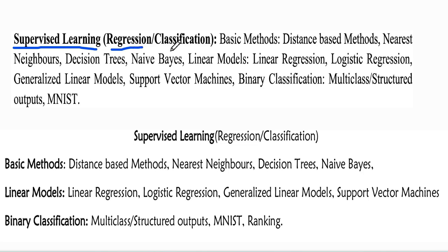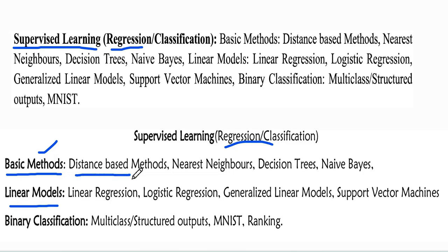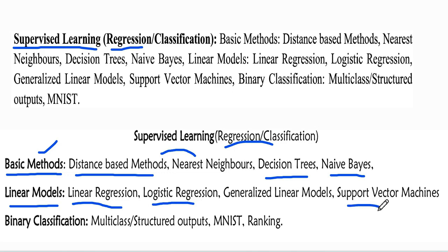Before discussing regression and classification algorithms of supervised learning, we first categorize the supervised learning methods. These may be regression and classification problems, categorized as basic methods or linear models. In basic methods we use distance-based methods, such as the nearest neighbors algorithm. Other algorithms include decision trees and the Naive Bayes algorithm. Coming back to linear models — these use geometric concepts of mathematics — we will discuss linear regression, logistic regression, and support vector machines.